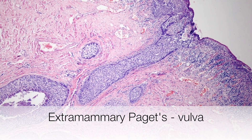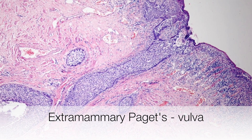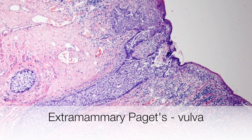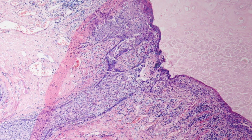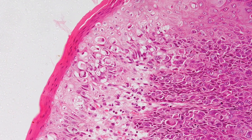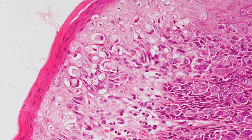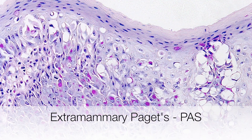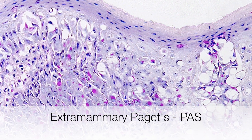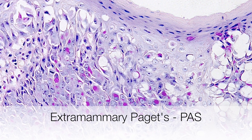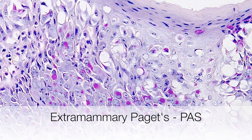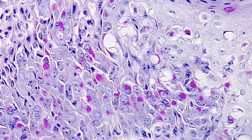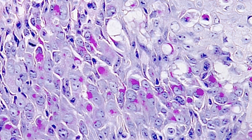Here is extramammary Paget's disease affecting the vulva, extending from the eccrine glands up into the epidermis. This is a higher power view showing the pale Paget cells that are in areas vacuolated. And finally, this is a PAS stain for mucin that nicely demonstrates the globules of mucin in the Paget cells. We can see that they tend to be situated towards the basal aspect of the epidermis.